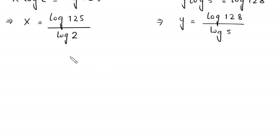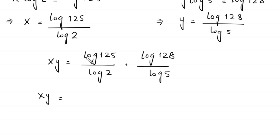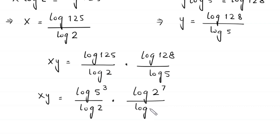Now we find the value of x times y by multiplying these two expressions. x times y is equal to log of 125 divided by log of 2, multiplied by log of 128 divided by log of 5. Next, log of 125 can be written as log of 5 cubed divided by log of 2, times log of 128, which can be written as log of 2 to the power 7 divided by log of 5.